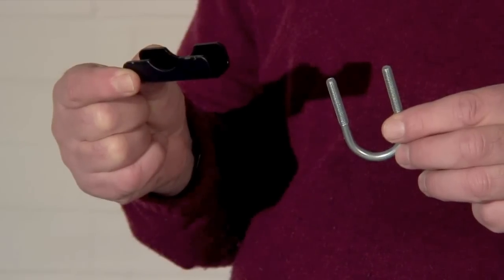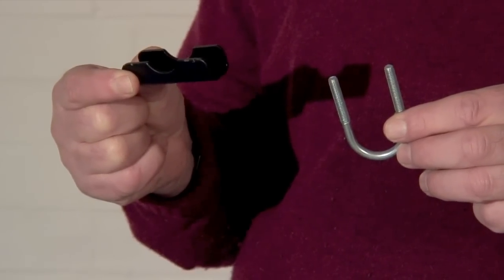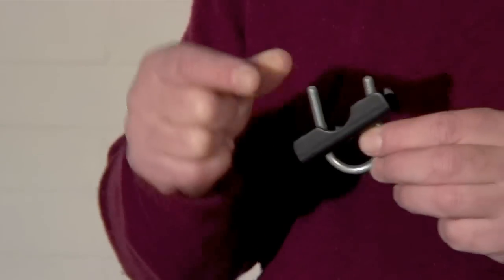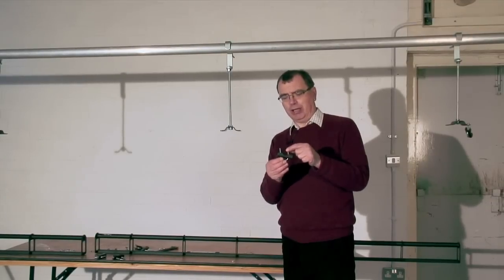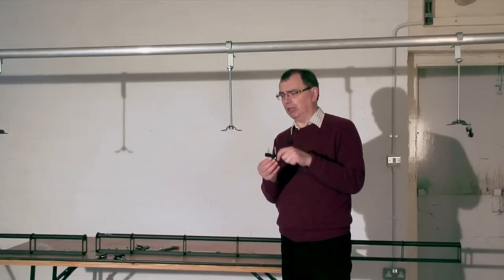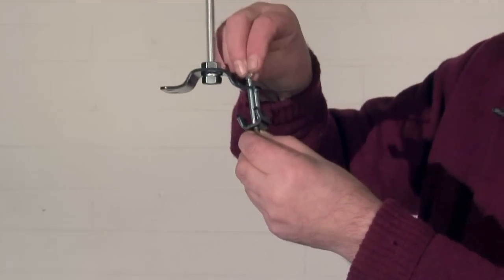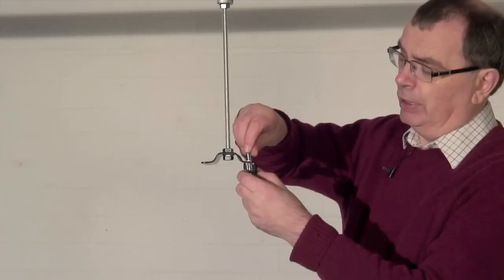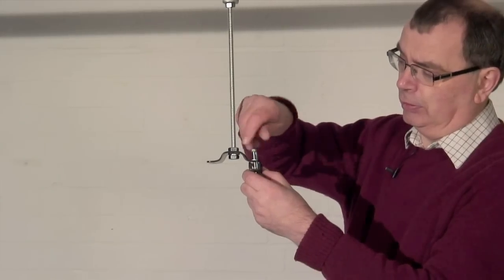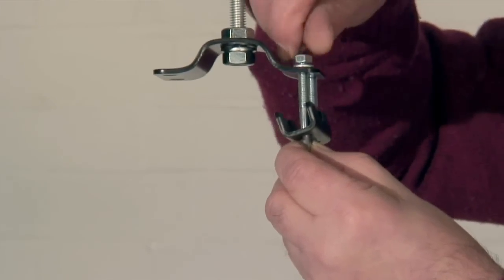So we get the first plate on and then you'll get these fixings. Now this is where the curtain track is actually going to fit. So the U-bolt fits around that way with the indent facing upwards. So it slides through these two holes at the top of the plate. You put a washer on and then a nut. So now we've got two fixings in place and we're ready to put the first section of track up.